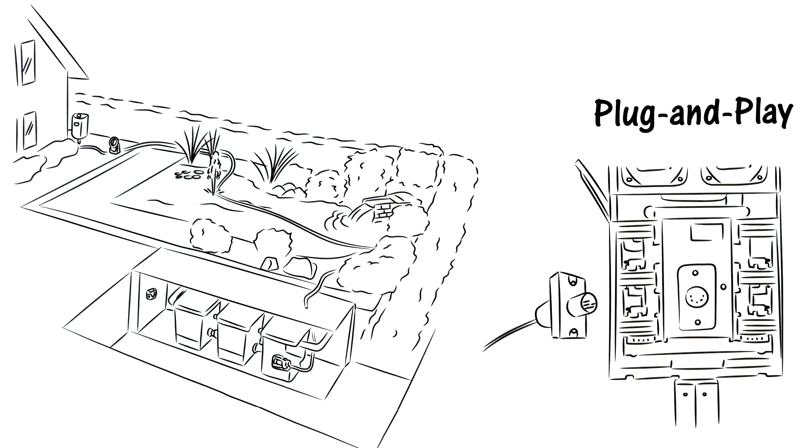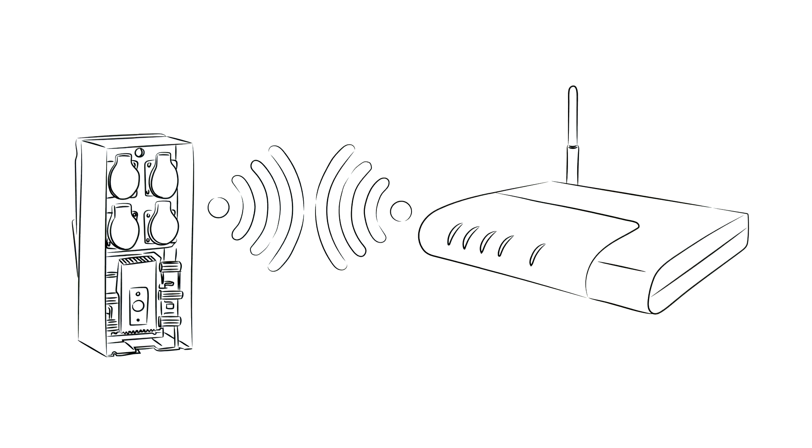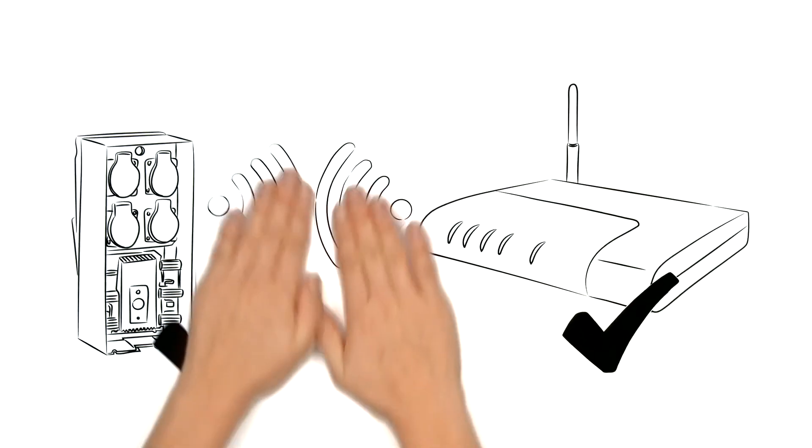That means the signals can be transmitted fault-free above and below the water. The base station was networked with the Wi-Fi in the house and was working in no time at all.